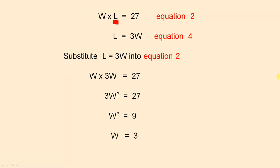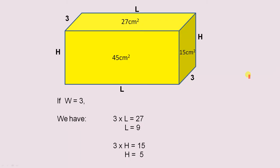So we remember that, that W is 3. So if W is 3, we have that 3 times L equals 27. So L must be 9. Okay? So L must be 9. And we already know that W equals 3. So 3 times H is 15. So 3H is 15. So H is 5.